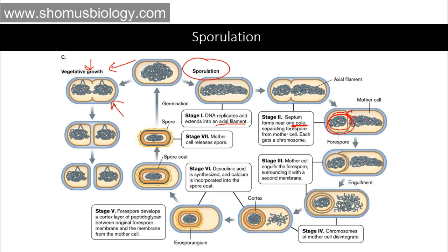Then in stage four, the chromosomes of the mother cell disintegrate. The mother cell chromosome gets disintegrated because we don't need it anymore — there is no further growth needed from the mother cell. We need the spore to remain healthy inside. The spore remains intact because the chromosomal DNA has already been transferred inside the spore.